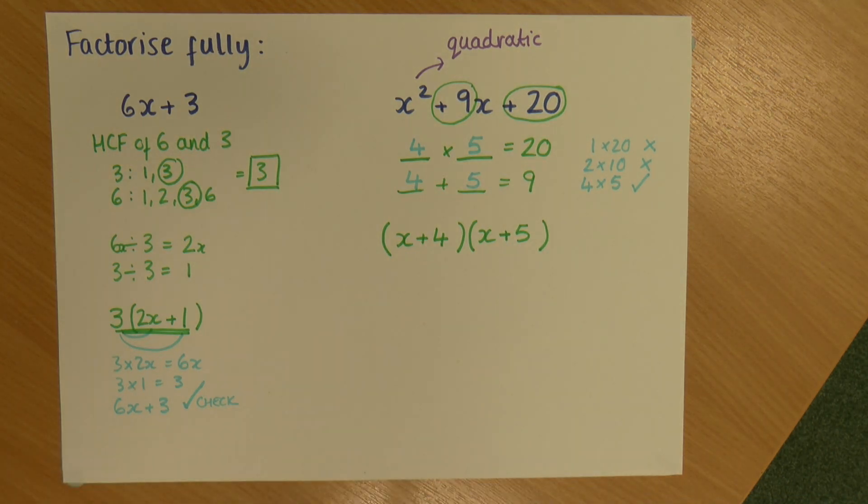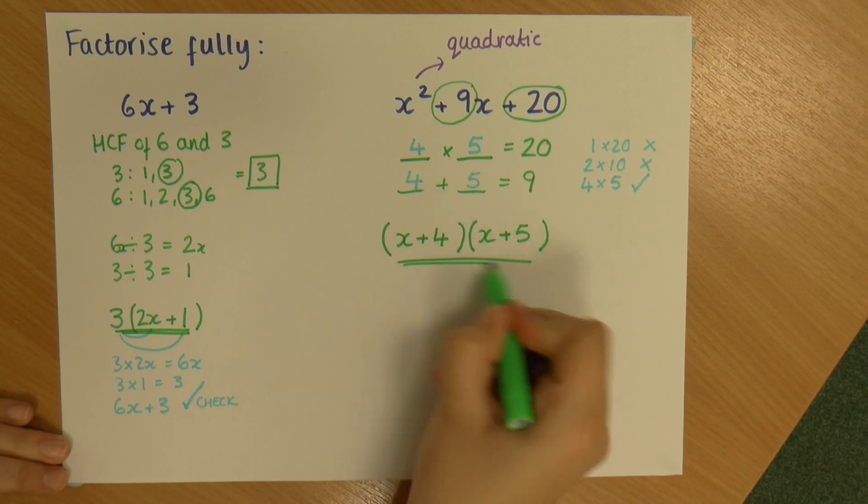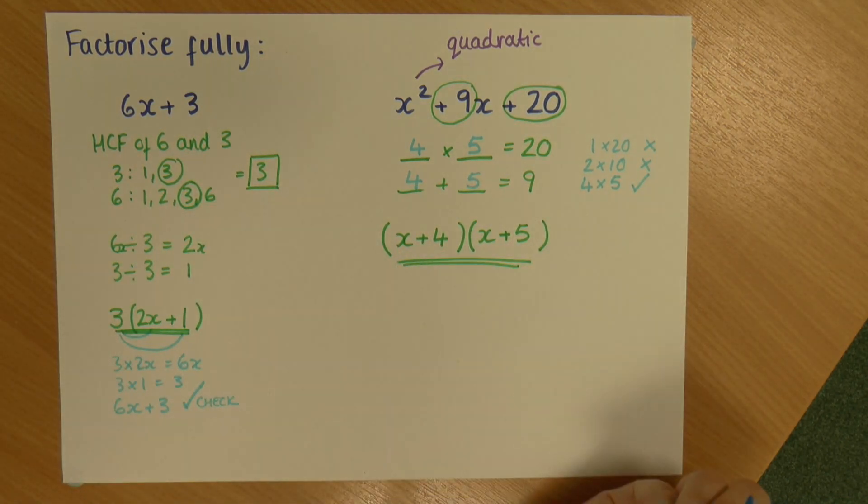It'll always be a pair of brackets with 2 x's in, or at least an x in each. And again I can check this. So I'm going to underline that because I'm fairly sure that's the answer, but I'll check it. So let's use the box method this time.